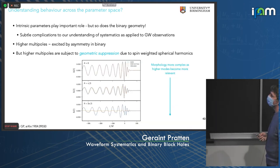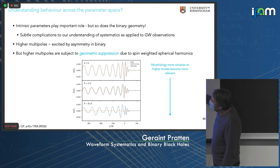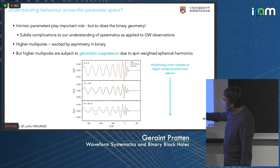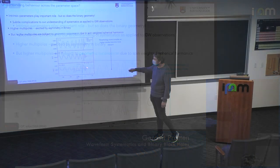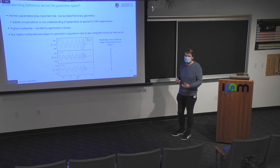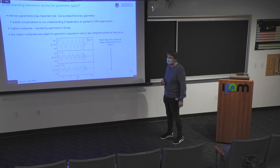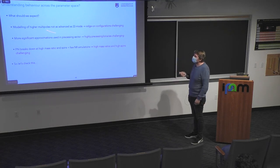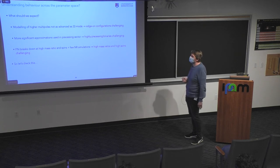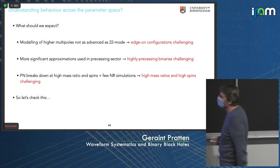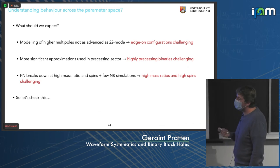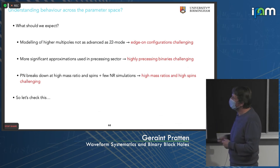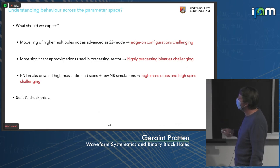Binary geometry is important. At inclination zero (face-on), where we're dominated by the 2-2 mode, results look fantastic against NR. But as you go to more extreme inclination angles, the 2-2-only model becomes completely discrepant, whereas once you include higher waveform modes in your model you can reconstruct the NR data meaningfully. High mass-ratio, highly precessing binaries with edge-on orientations are the worst case. PN breaks down at higher mass ratios, making it more challenging to push towards Q=8, Q=18, and so on, compounded by the depletion of NR simulations.